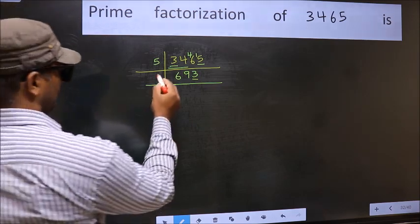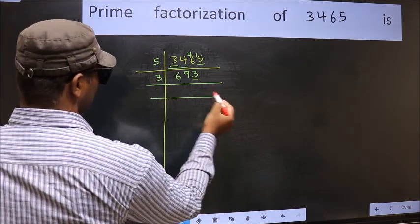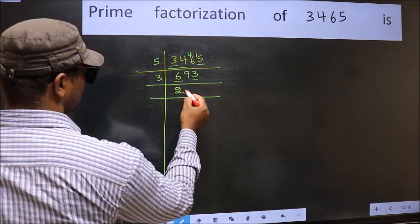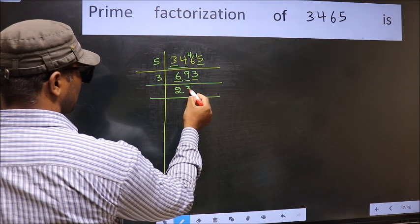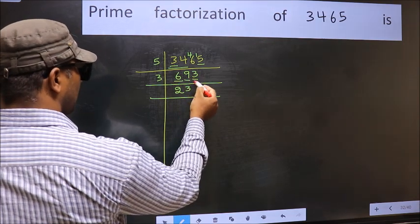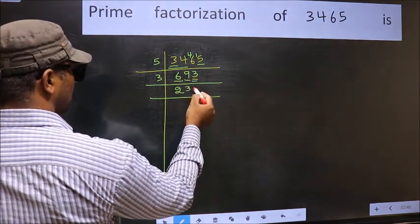So take 3 here. First number 6, when do we get 6 in 3 table? 3×2=6. The other number 9, when do we get 9 in 3 table? 3×3=9. The other number 3, when do we get 3 in 3 table? 3×1=3.